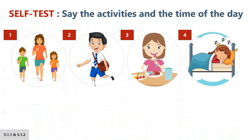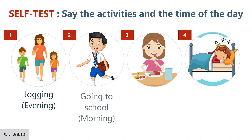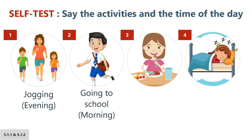Let's do a self-test. Say the activities and the time of the day. Look at the first picture. What are they doing? Yes, you are right — they are jogging. Usually we go jogging in the evening. Look at the second picture. The boy is in his school uniform. Where is he going? Yes, he's going to school. We go to school in the morning.